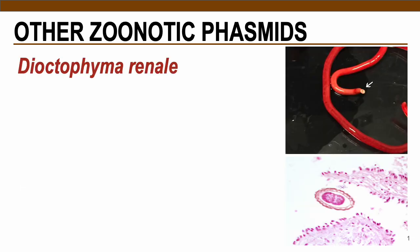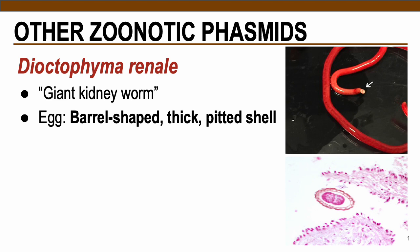The next parasite is Dioctophyma renale. From the species name renale, that means this is the giant kidney worm. In terms of morphology, the egg resembles a barrel with a thick pitted shell surrounding the embryo, just like here on this picture, which is actually from a tissue biopsy.